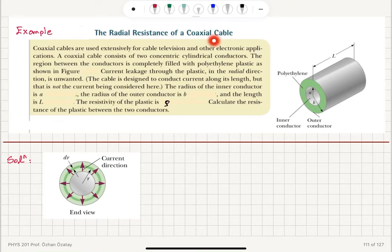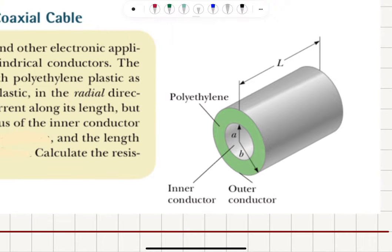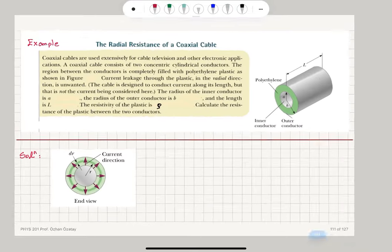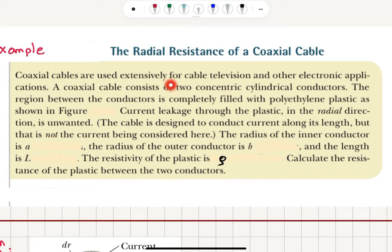The radial resistance of a coaxial cable. Here is a picture of a coaxial cable. It consists of an inner conductor and outer conductor. The space in between is filled with polyethylene. The inner radius is A, the outer radius is B, and the length of the cable is L. Coaxial cables are used extensively for cable television and other electronic applications.